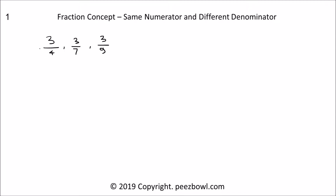In these fractions, we have same numerators as 3, but different denominators as 4, 7, and 9. In these type of fractions, we need to pay attention while performing addition and subtraction. Let us see few examples which will explain how to perform addition and subtraction on the fractions when we have same numerators but different denominators.